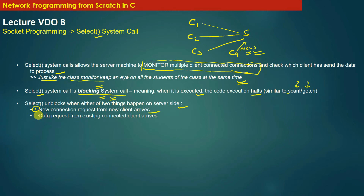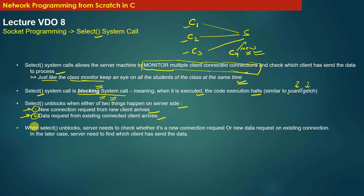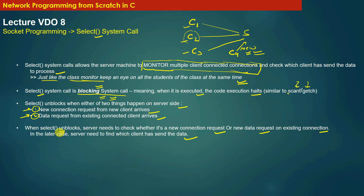The second scenario is when a data request from an existing connected client arrives — such as from C1, C2, or C3. So the server unblocks from the select system call when either event one or event two happens. When the select system call unblocks, the server needs to check whether it is a new connection request or a new data request on an existing connection. In the latter case, the server needs to find which client sent the data, since it could have been unblocked by C2 or C3.